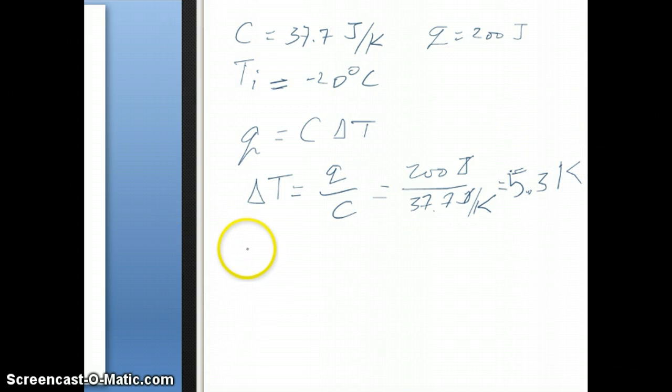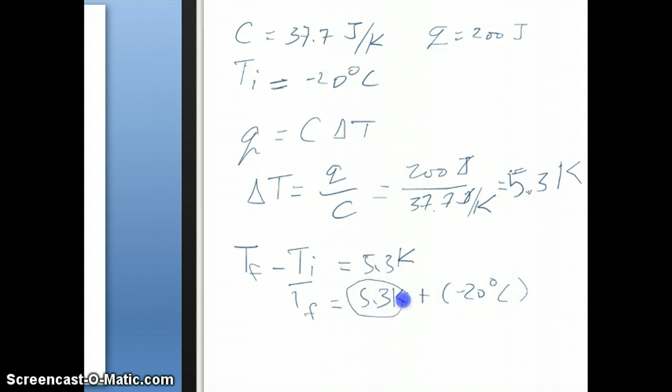Then what you need to do is calculate the final temperature. Remember that delta T is always equal to T final minus T initial, and that's equal to 5.3 Kelvin. So T final, therefore, is 5.3 Kelvin plus T initial. Remember T initial is minus 20 degrees Celsius. Now you have two different units here, but remember that Kelvin increase, if you're increasing 5.3 degrees Kelvin, you're going to increase by the same temperature in Celsius. So we can also write this as 5.3 degrees Celsius plus negative 20 degrees Celsius, and if you do that, your answer would be negative 14.7 degrees Celsius.